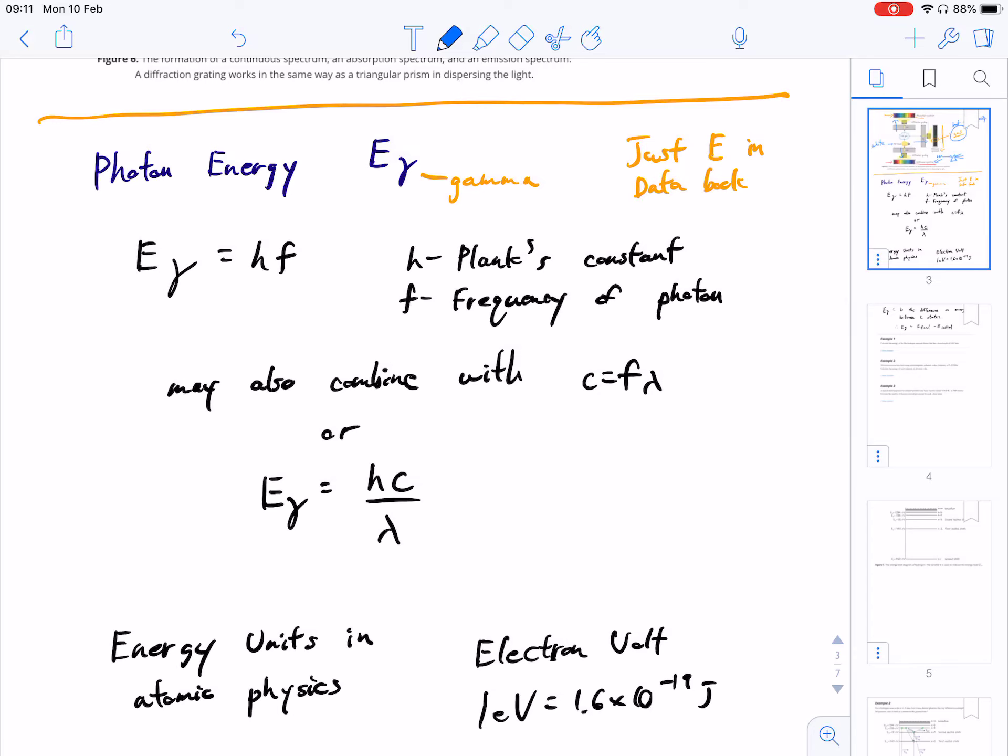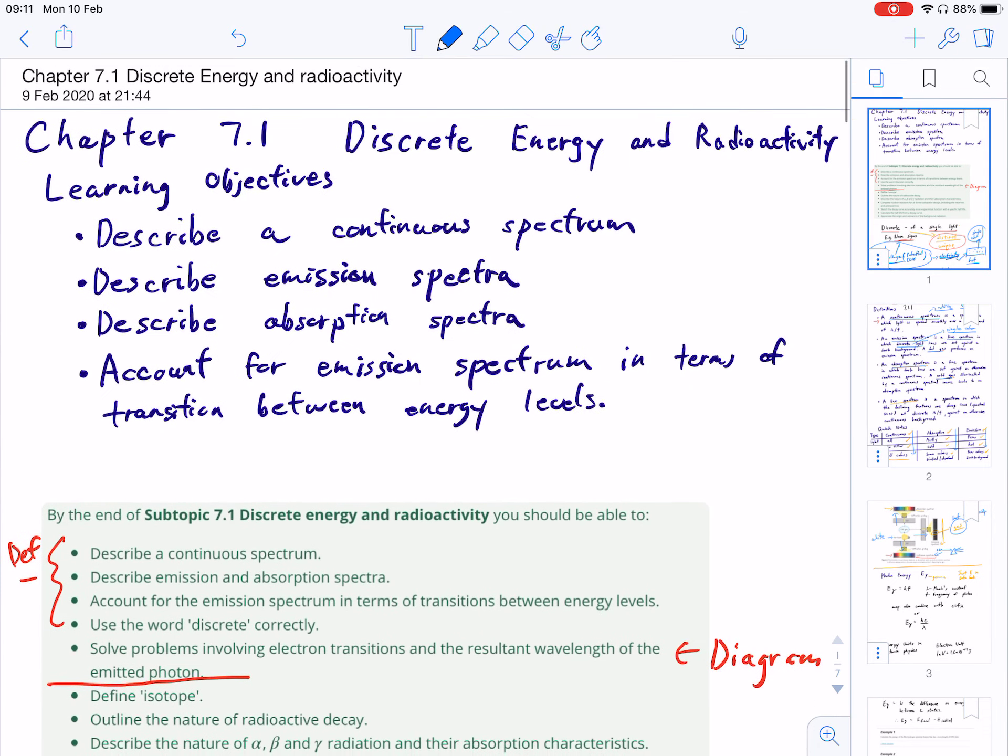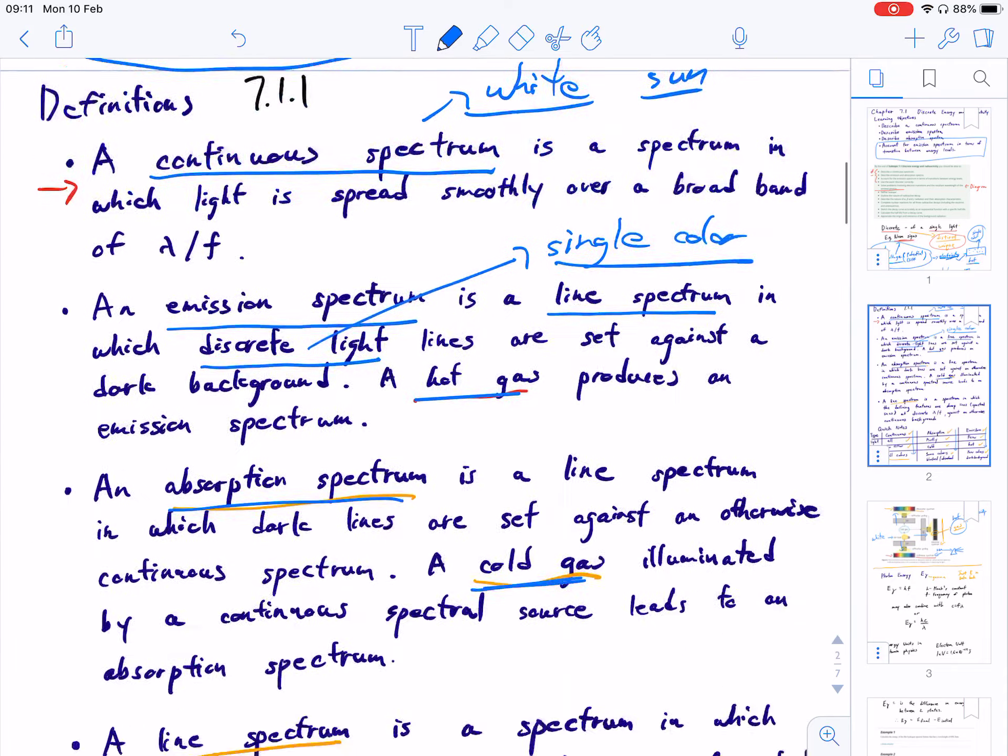Hey guys, welcome to the second video for our topic 7.1, discrete energy and radioactivity. So in this video, we're going to be looking at this portion, which is accounting for the emission spectrum in terms of transition between energy levels.